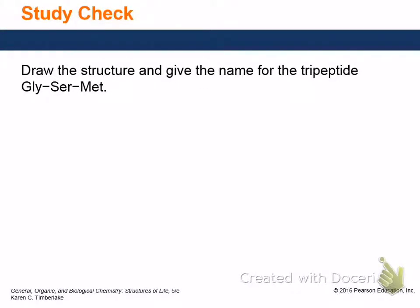There are a lot of combinations for this. I thought what we would do is just show how you could have the different combinations and then how you would name them. It says draw the structure and give the name for the tripeptide glycine, methionine, serine. What we got sidetracked on was not the structure, but the fact that they could be in any order - how many combinations were possible. You could have glycine first, that's one.